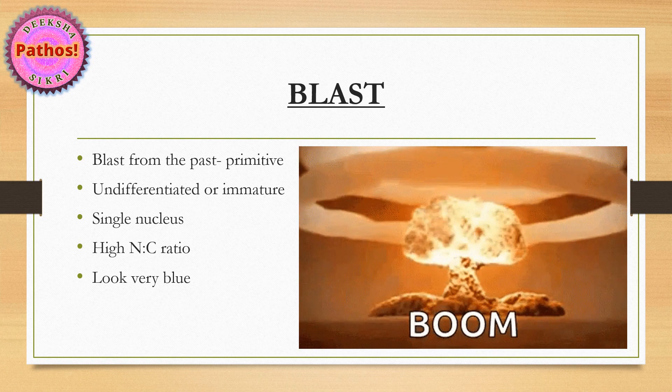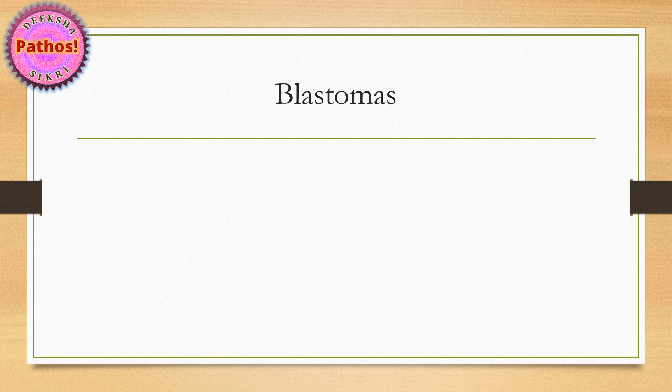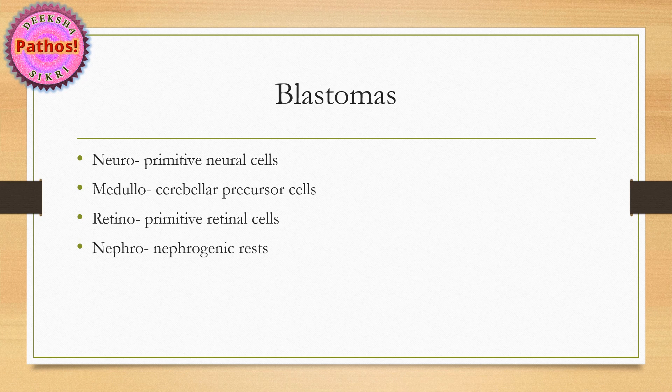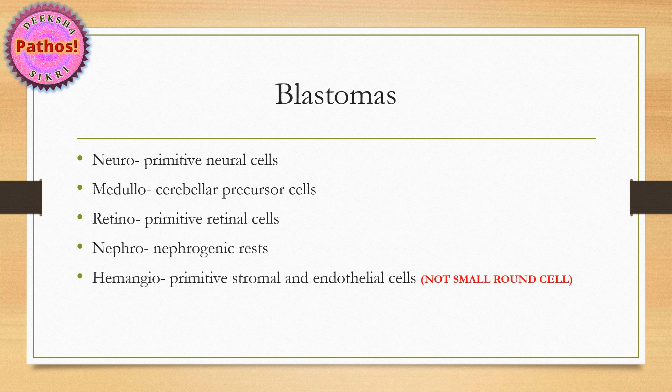Let me name some tumors you'd have heard of in terms of blasts. There's a group called blast tumors — not all are small round blue cell tumors, but all are composed of primitive cells. Neuroblastoma: primitive neural cells. Medulloblastoma: arises in the cerebellum from cerebellar precursor cells. Retinoblastoma: primitive retinal cells. Nephroblastoma, also called Wilms tumor, arises from primitive precursor cells called nephrogenic rests, capable of differentiating into stromal cells, epithelial cells, and completely primitive blastemal cells — which is why nephroblastoma is said to be a triphasic tumor. Hemangioblastoma is also seen in the cerebellum, part of VHL syndrome, with primitive stromal and endothelial cells forming vascular spaces — not a small round blue cell tumor, but the rest of the blast tumors do have a small round cell tumor component.